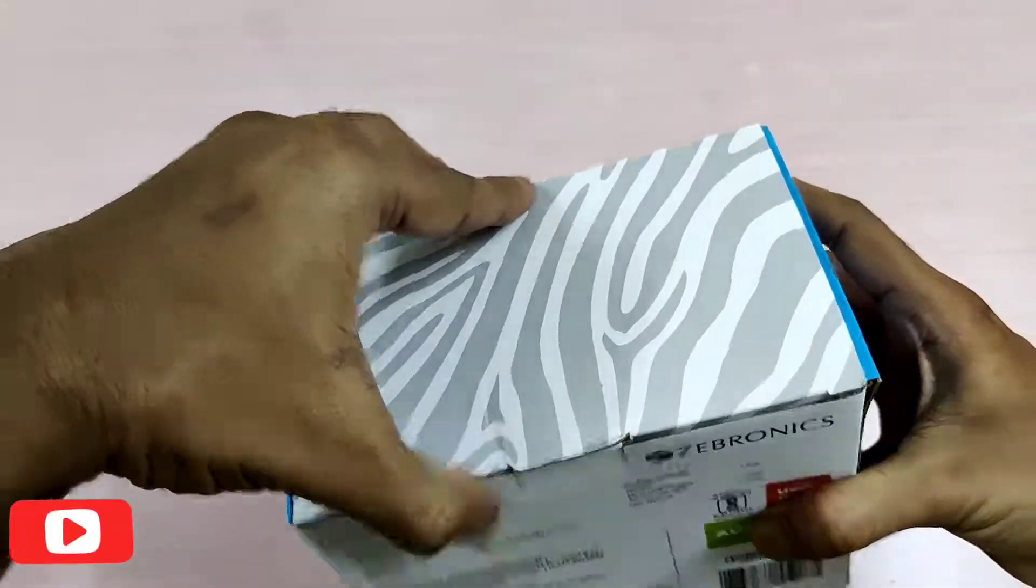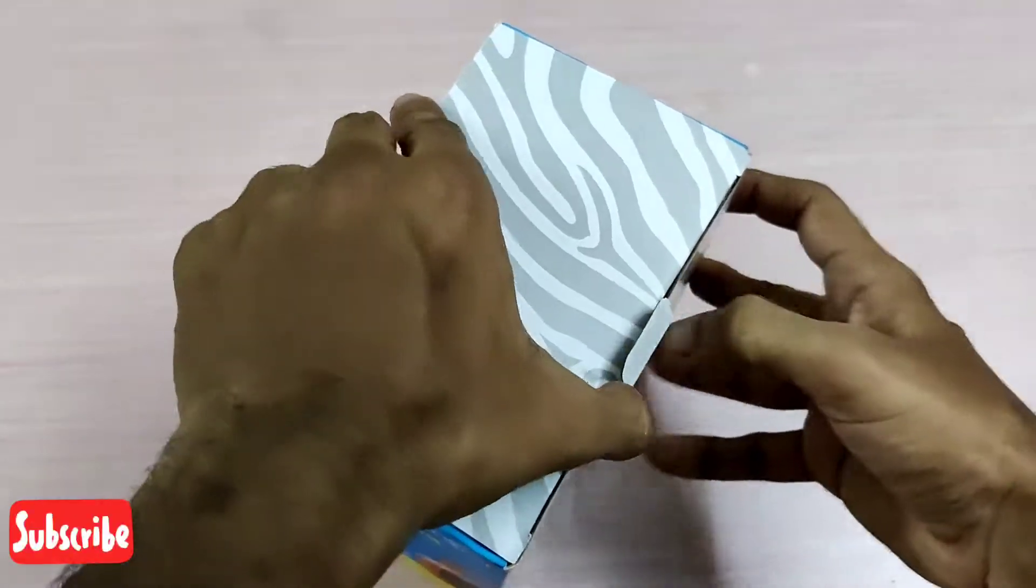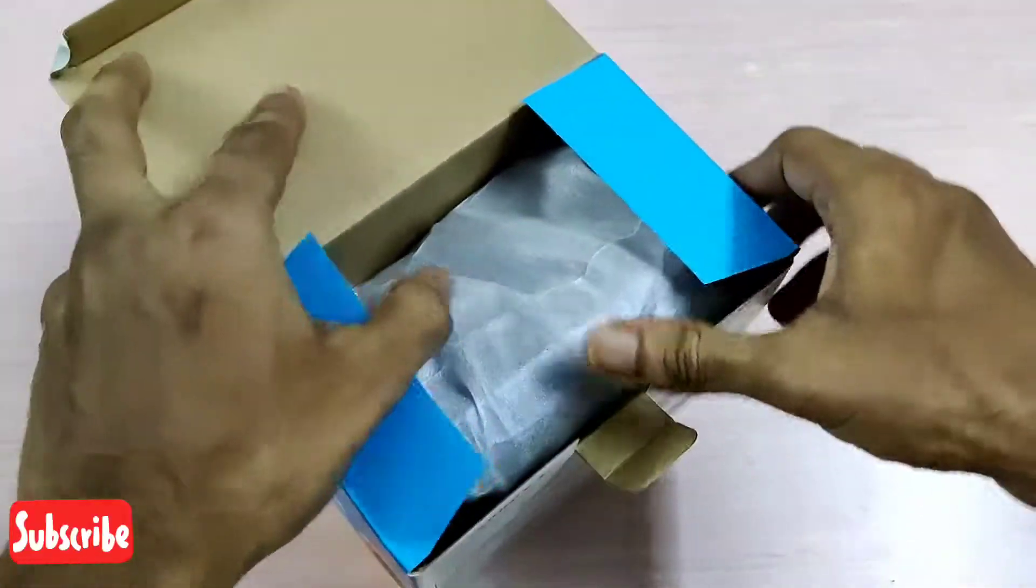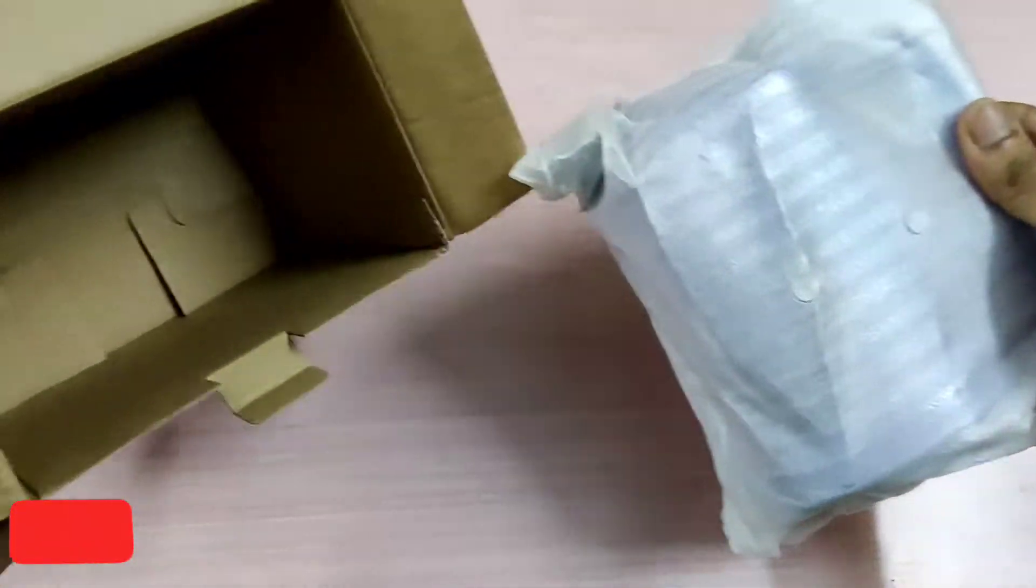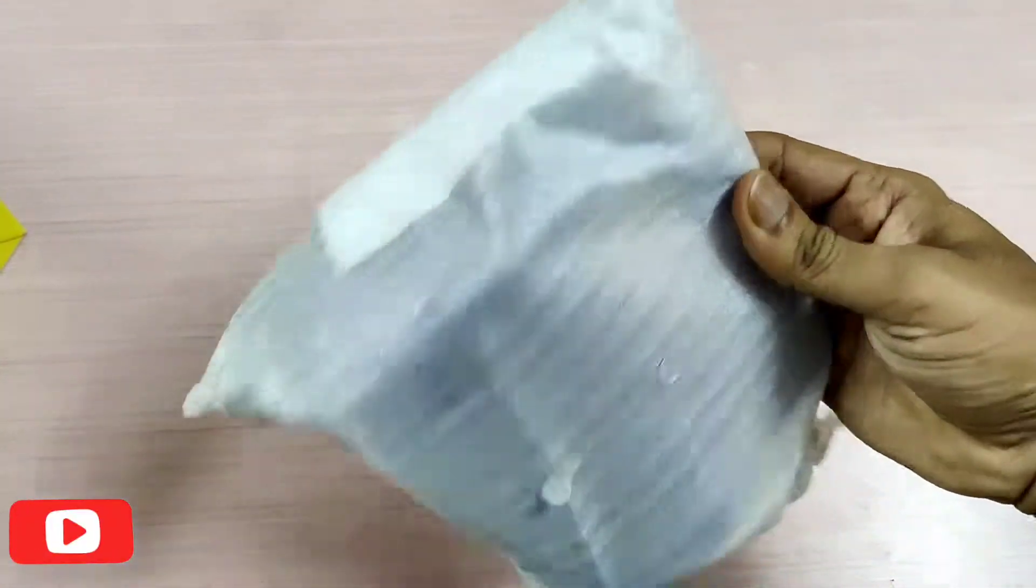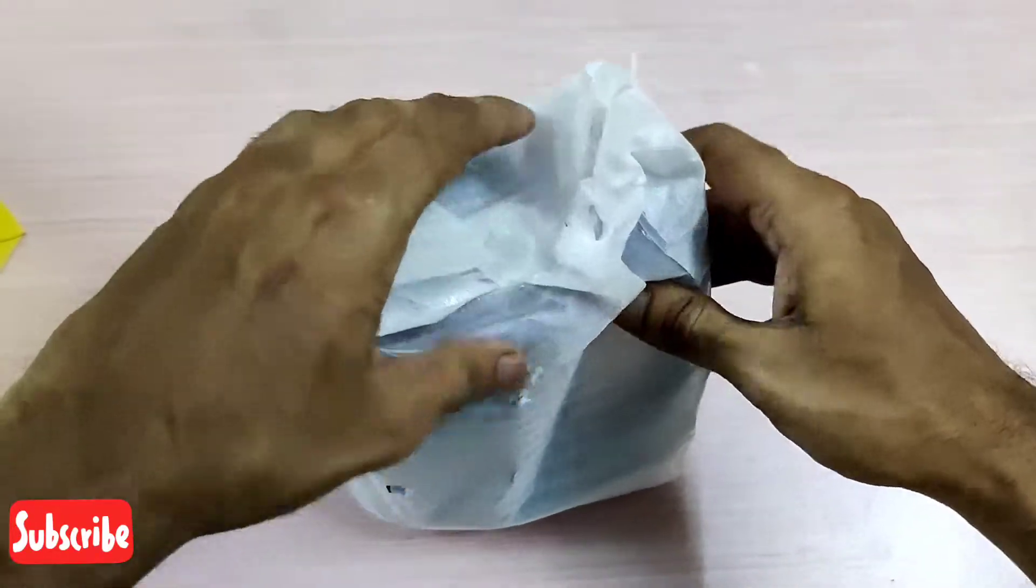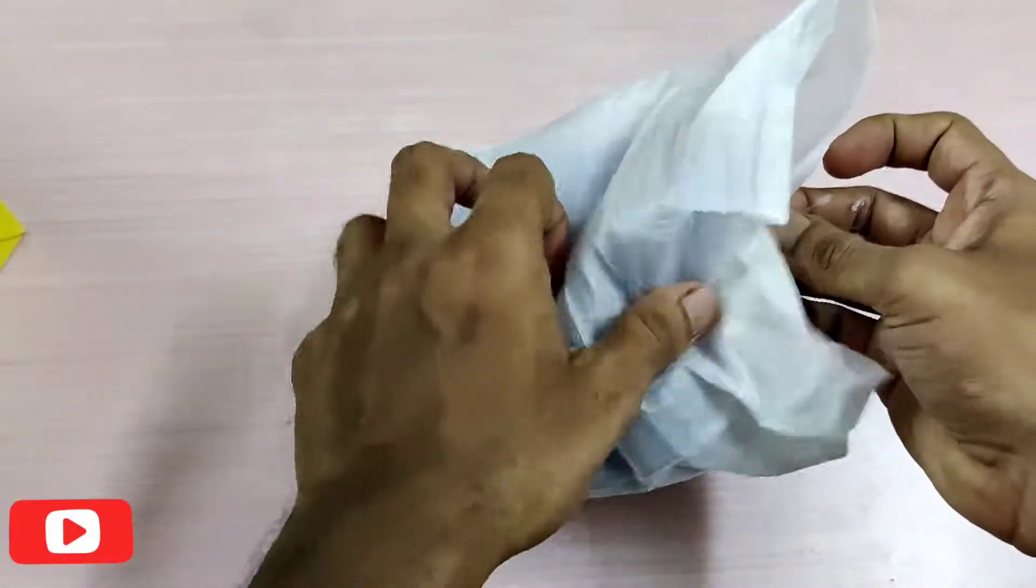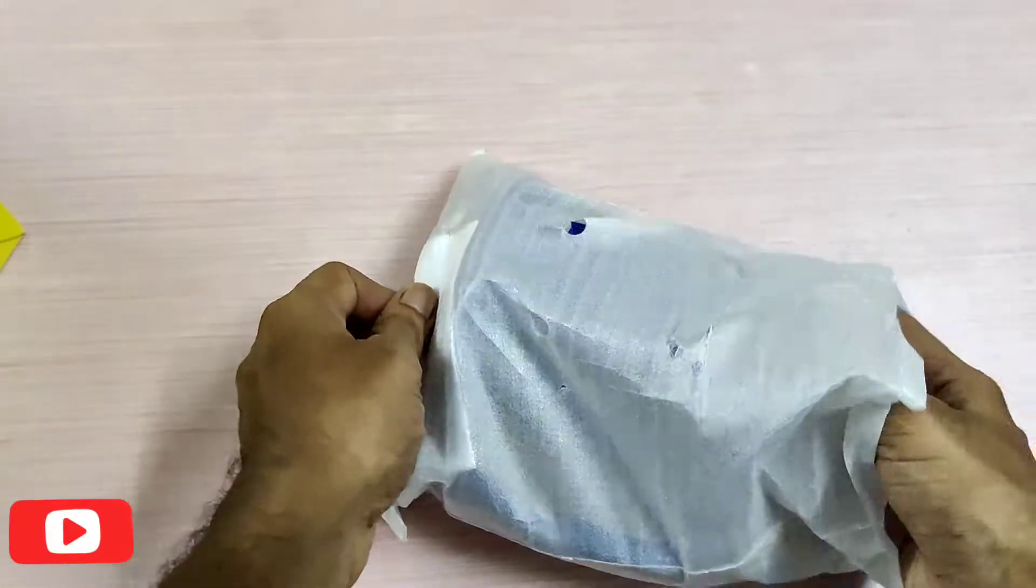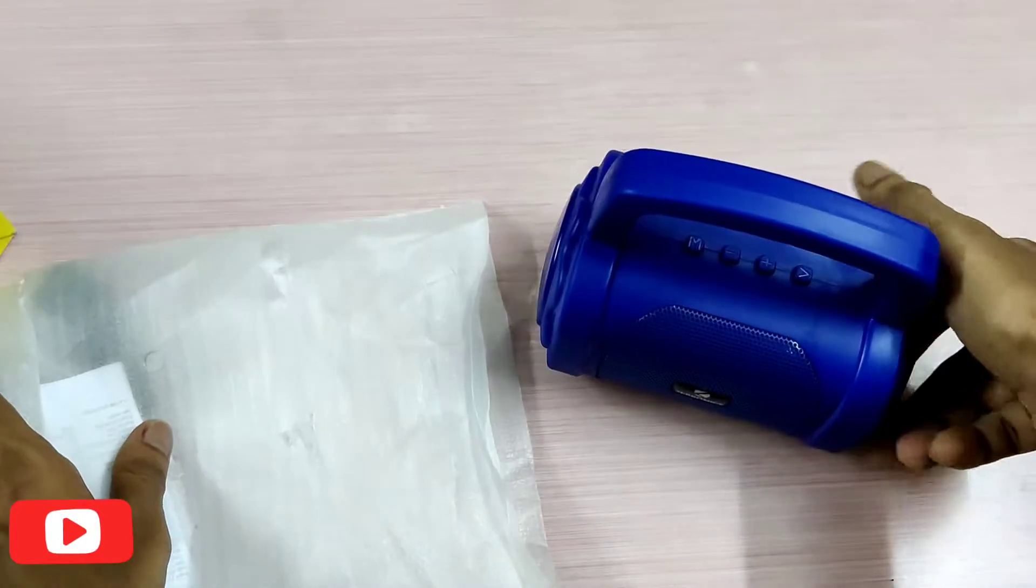So let's open the box right away. It's a pretty simple box given the price range. There's nothing much inside. There is the speaker itself and the user manual.